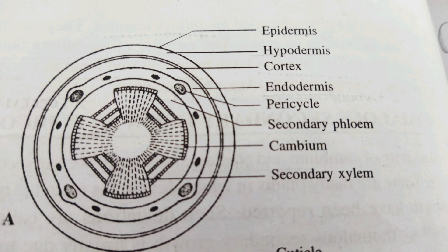The unusual position of cambium produces a ridges and furrows structure, because the cambium has an abnormal function. In the normal case, xylem is on the inside and phloem is on the outside.